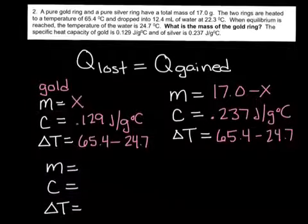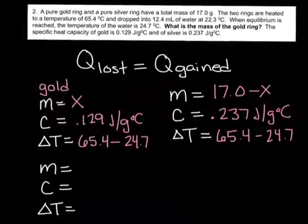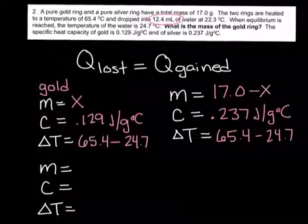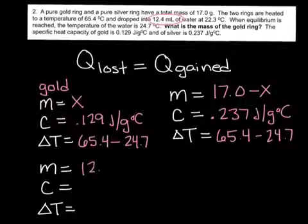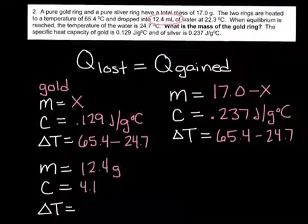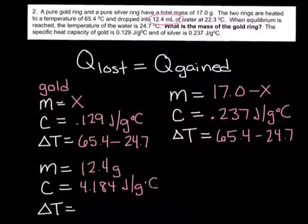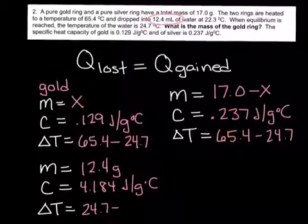Then looking at the water, we're going to look at those exact same variables. The mass of water is not directly given to us. We do, however, have 12.4 milliliters of water at 22.3°C. For the purpose of this problem, we're going to assume that the density of water is 1 g/mL. If we have 12.4 milliliters, it should have a mass of 12.4 grams. The specific heat capacity of water is 4.184 J/g°C, and the temperature change would be 24.7 minus 22.3.